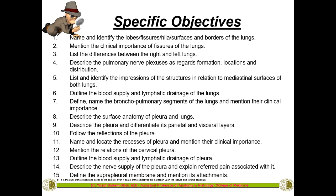The first objective is to name and identify the lobes, fissures, hala surfaces, and borders of the lungs; mention the clinical importance of the fissures; list the differences between the right and left lungs; describe the pulmonary nerve plexuses as regards formation, location, and distribution; and list and identify the impressions of structures in relation to the mediastinal surfaces of both lungs. Outline the blood supply and lymphatic drainage of the lungs.